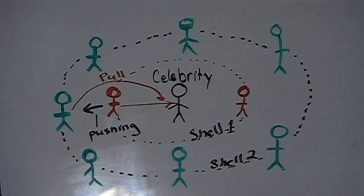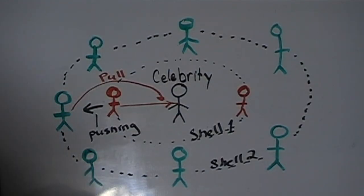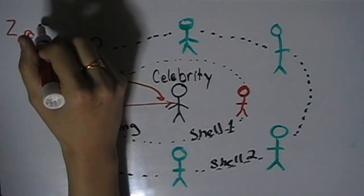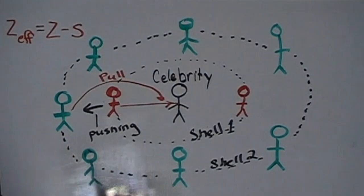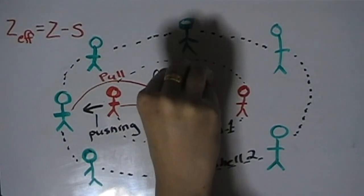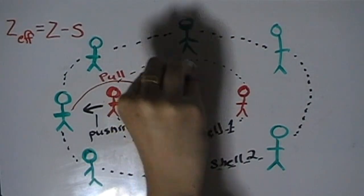Now since electrons are being repelled by other electrons, it means that the attraction an electron feels toward the nucleus is less than the actual nuclear charge. So the effective nuclear charge — the net positive charge an electron experiences — is equal to Z minus S. Z is the number of protons in the nucleus, or the atomic number, and S is the number of electrons between the nucleus and the electron in question.